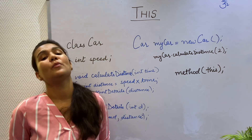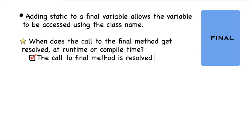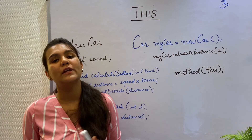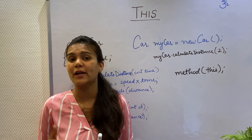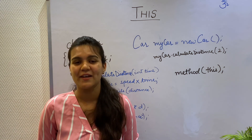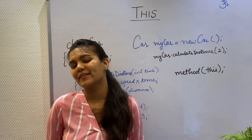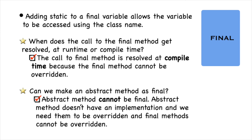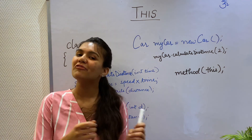Going back to the questions I had asked when explaining the final keyword: the first question was when does Java resolve the call to a final method. Java resolves the call to the final method during compile time, not dynamically, because we know that the final keyword stops the method from getting overridden — so there are no overridden methods, and we can resolve the call at compile time. The second question was: can we add the final keyword to an abstract method? The final keyword prevents the method from getting overridden, and the whole idea of adding the abstract keyword is to require implementation of the method — so you cannot add the final keyword to an abstract method.